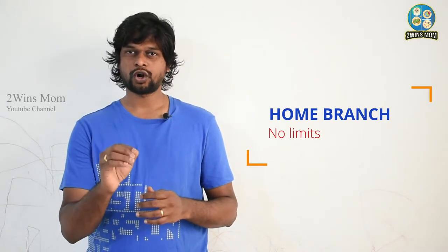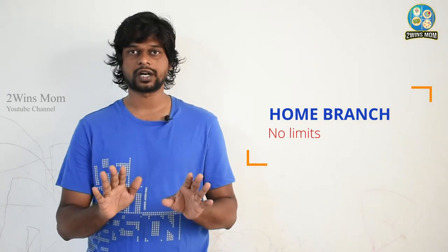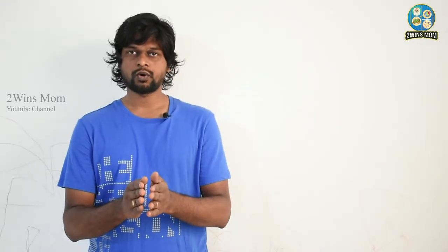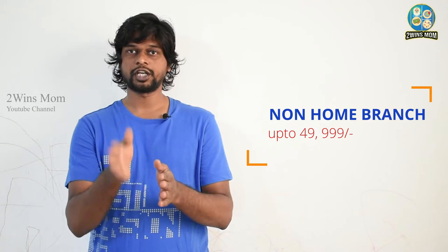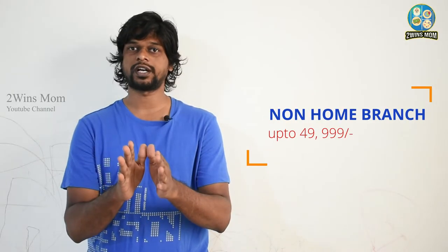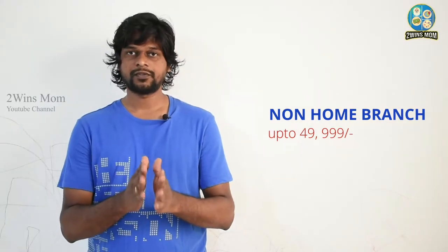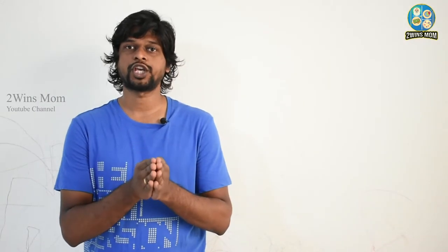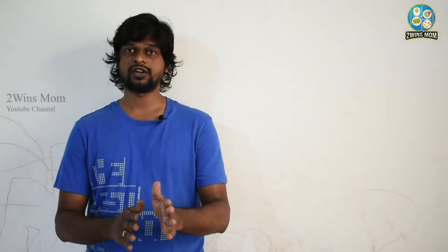You can deposit to your own account or to a third party account, and also to other branches. For home branch transactions, there is no charge and no limit — you can deposit any amount. For non-home branch deposits, the maximum cash deposit is 50,000. If you want to deposit more than 50,000, you need to provide your PAN. For cash deposit machines (CDM), you will also need your PAN.